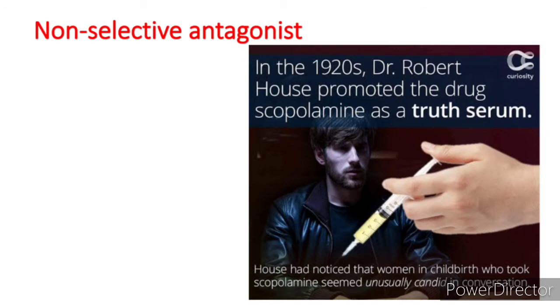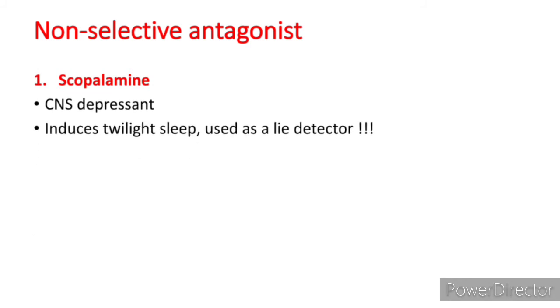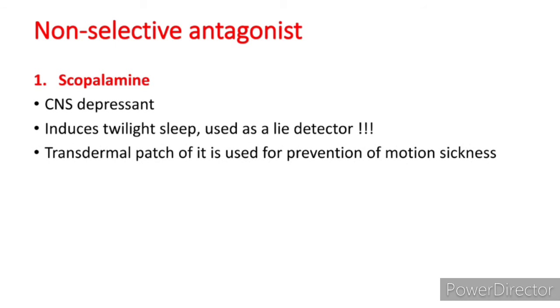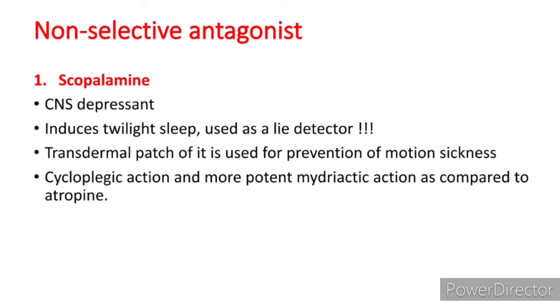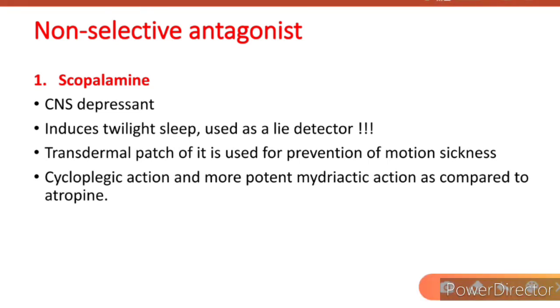Scopolamine — in the 1920s, Dr. Robert House promoted scopolamine as a truth serum. This is a frequent MCQ: which drug is known as a truth serum? The answer is scopolamine or hyoscine. Scopolamine is a CNS depressant that induces twilight sleep. A transdermal patch is used for prevention of motion sickness. It also has cycloplegic action — paralysis of ciliary muscles causing loss of accommodation — and potent mydriatic action used by ophthalmologists to examine the retina.